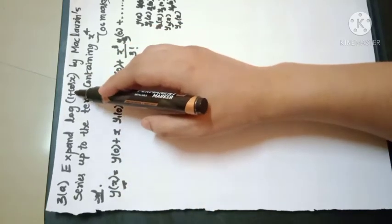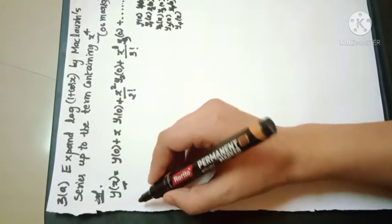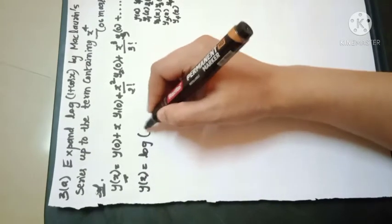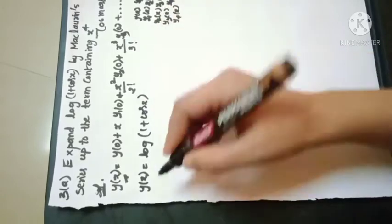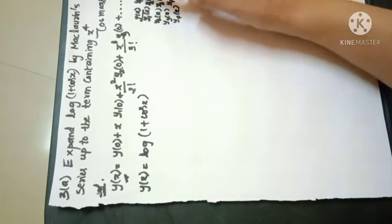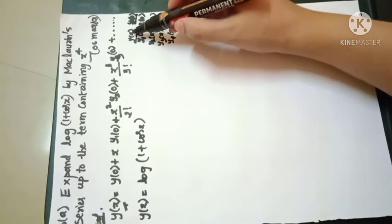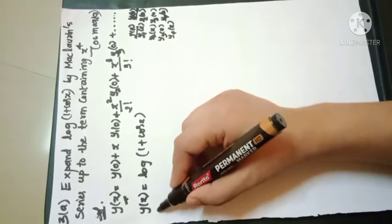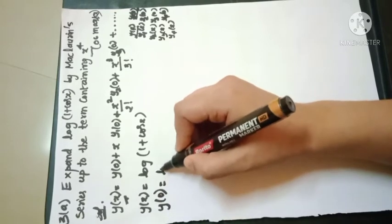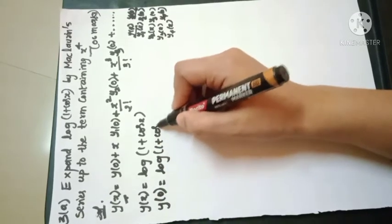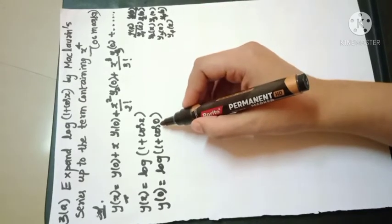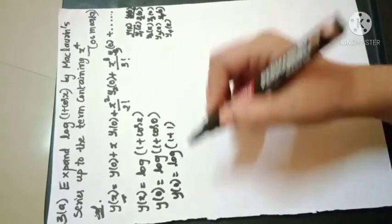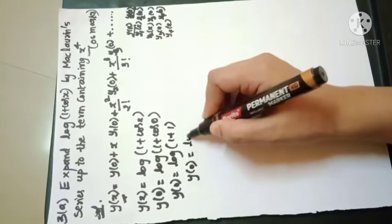Here y(x) = log(1 + cos x). We find y(0) by substituting x = 0: y(0) = log(1 + cos 0). Since cos 0 = 1, y(0) = log(1 + 1) = log 2.